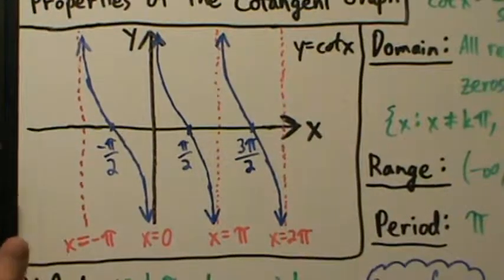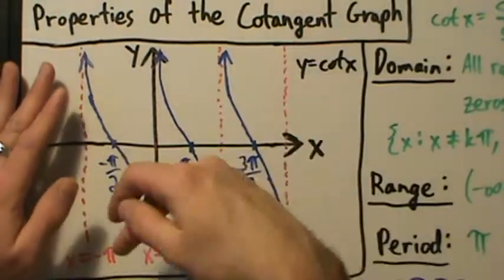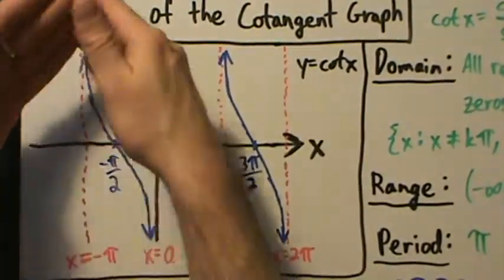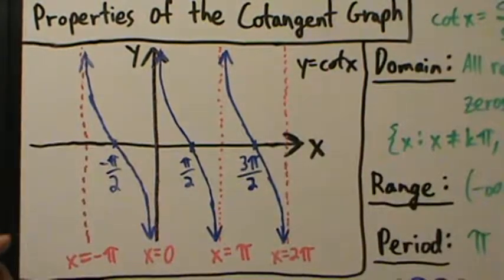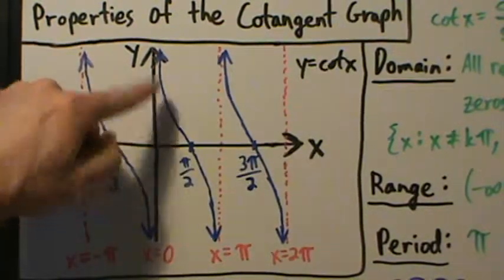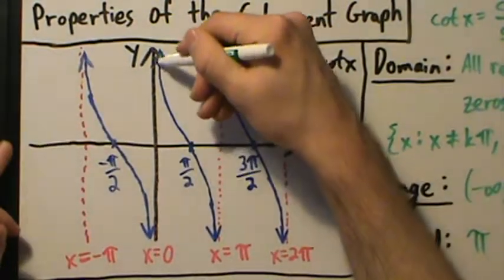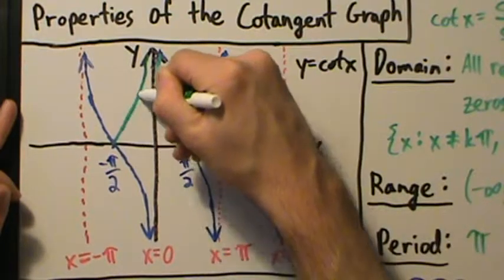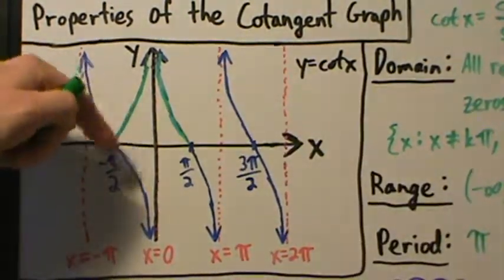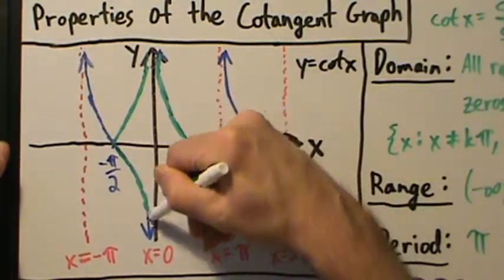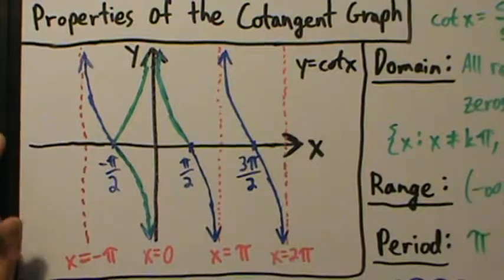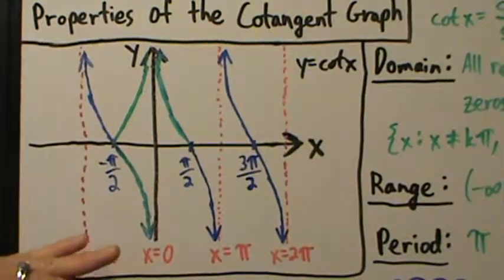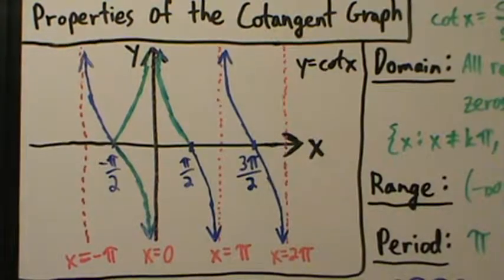Graphically, being an odd function means the graph is symmetric over the origin. That means if you reflect over the y-axis and then over the x-axis, you get a mirror image of what you reflected. For example, take a small piece of the graph, reflect it over the y-axis to get a corresponding piece, then reflect that over the x-axis, and you get exactly the matching piece of the original graph. This is true for the entire cotangent graph.